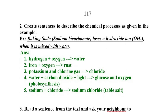Second question: Create sentences to describe chemical processes. Examples: Hydrogen and oxygen combine to create water. Iron and oxygen react to create rust. Potassium and chlorine gas combine to create chloride. Carbon dioxide and light with water create glucose and oxygen through photosynthesis. Sodium and chloride combine to create sodium chloride — table salt.